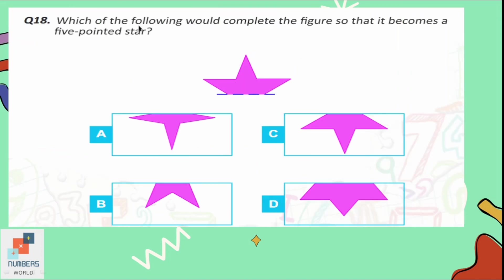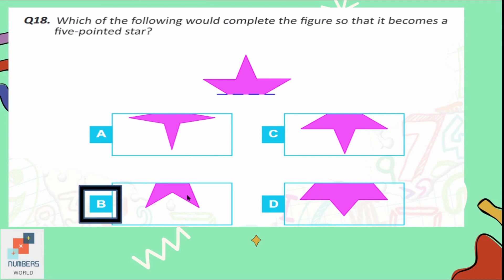Question number 18: which shape would complete the figure so that it becomes a 5-pointed star? Looking at all the options, option B is the only one which can make it a 5-pointed star. The rest of the options would create a 6-pointed star. So option B is the correct one.